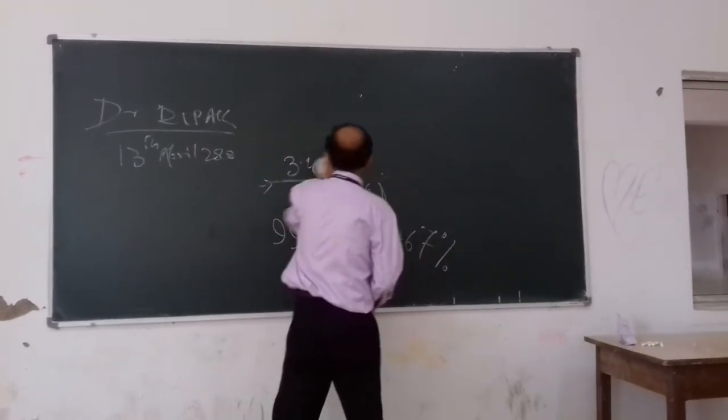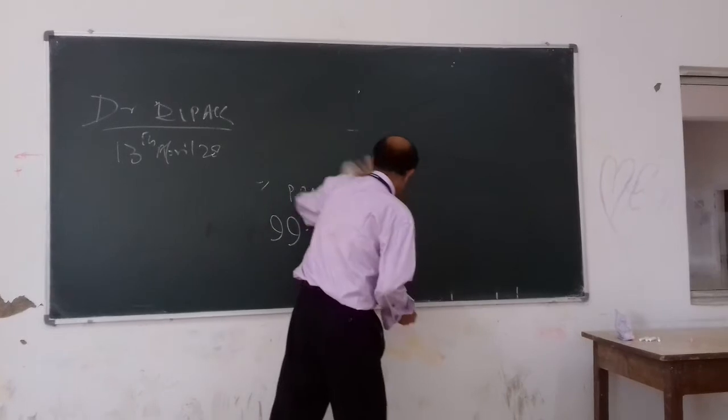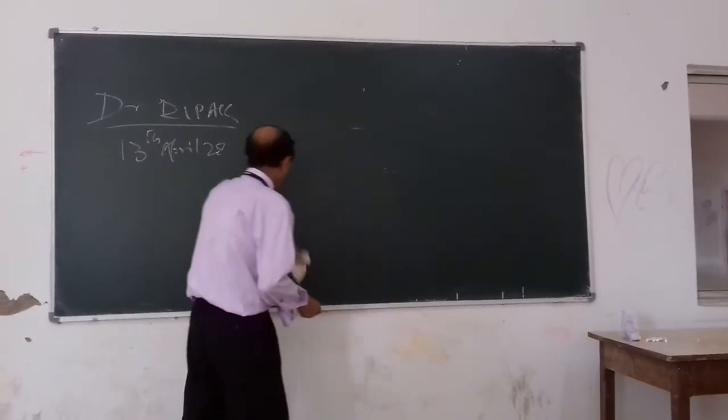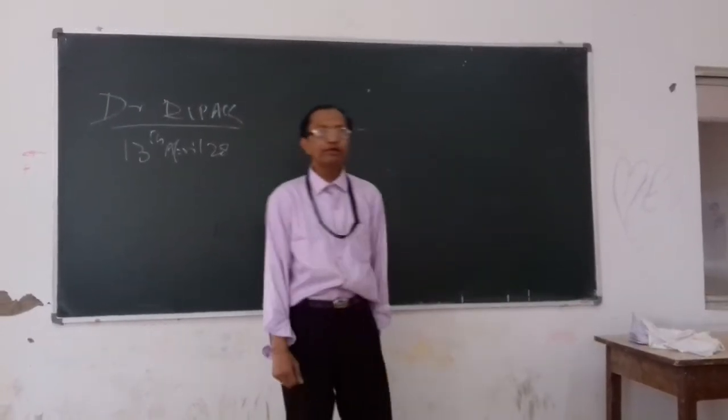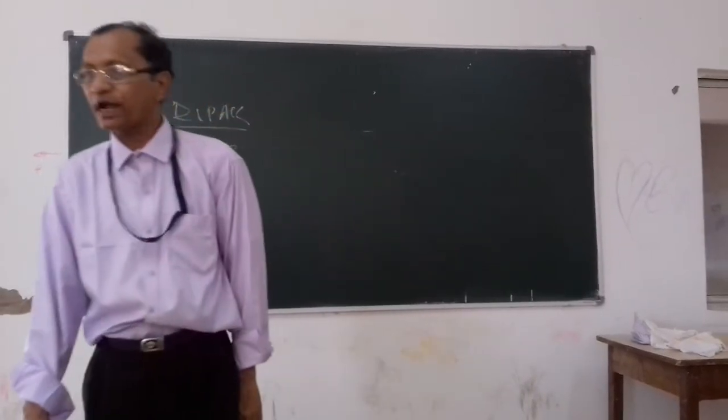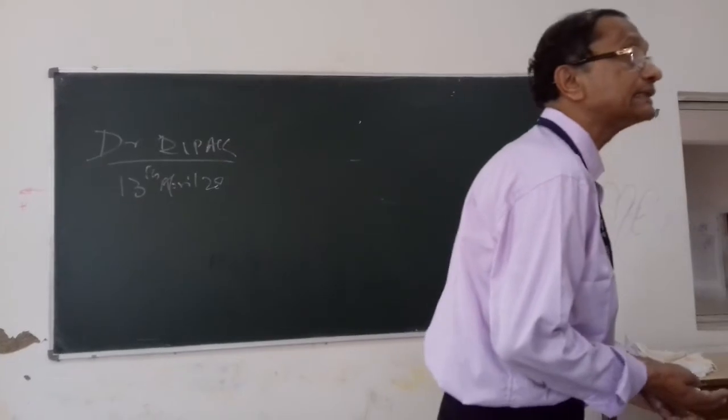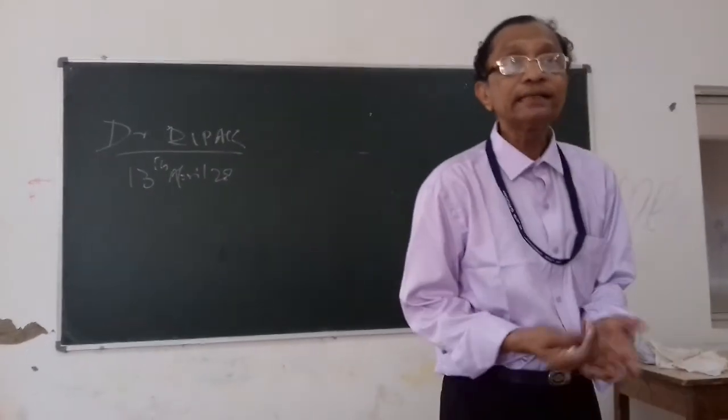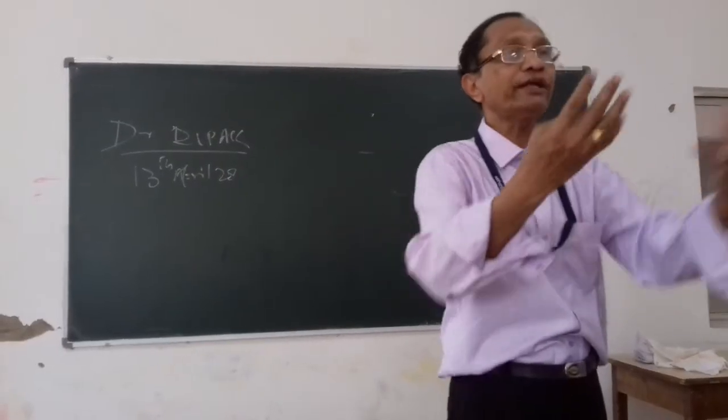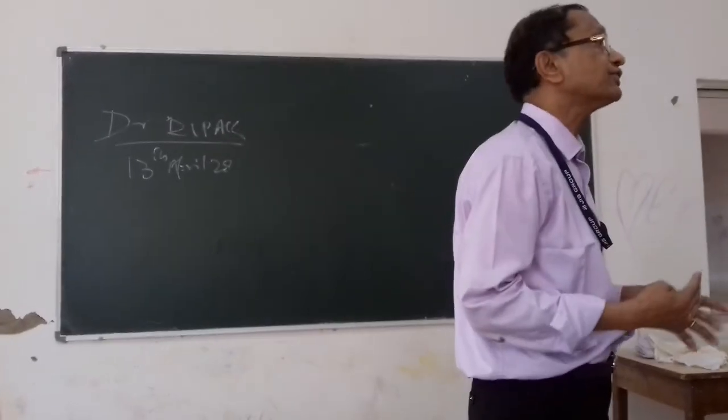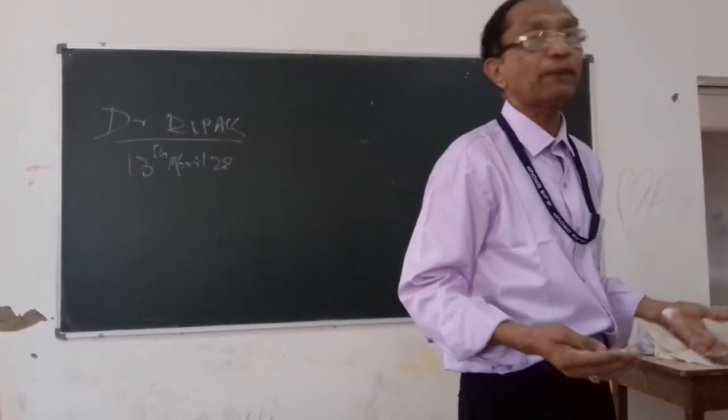Now, here, this Six Sigma, how to get it? How to get it in a production process? I told you, Sigma is the standard deviation. How to find out the standard deviation of a product in a production process?